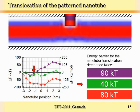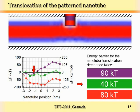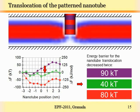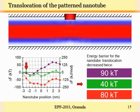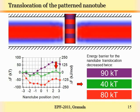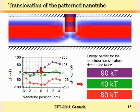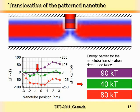Here you can see the result of the simulation of translocation of a patterned nanotube through the phospholipid membrane. The free energy curve of the patterned nanotube, shown as the green line, is much closer to zero than the free energy curves corresponding to the homogeneous hydrophilic (red) and homogeneous hydrophobic (violet) nanotubes. The free energy barrier for translocation is at least twice lower for the patterned nanotube than for the homogeneous ones, and by further modifying the interaction properties of the different surface types in the pattern, we can reduce this barrier even more.